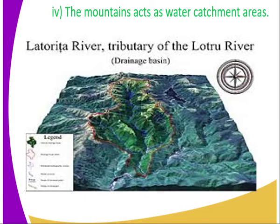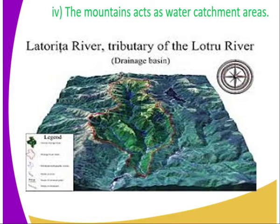Another significance: the mountains act as water catchment areas. The large mountains act as areas where we tap water. Water comes from the grassy areas and from the topmost part of the mountain through melting. In the mountains formed by folding, the windward side receives heavy rainfall, so they also become water catchment areas.